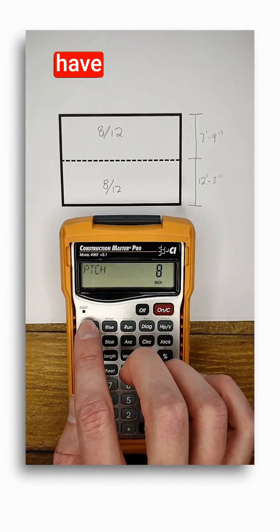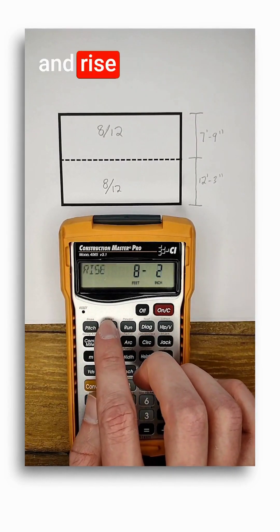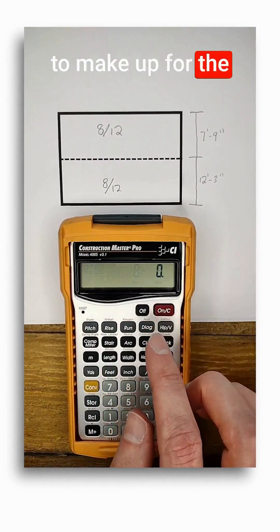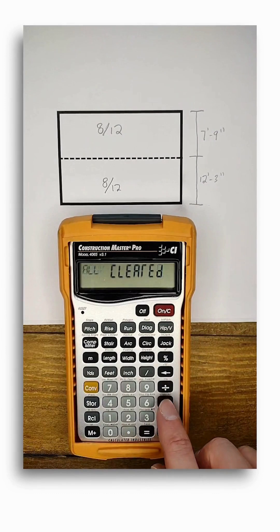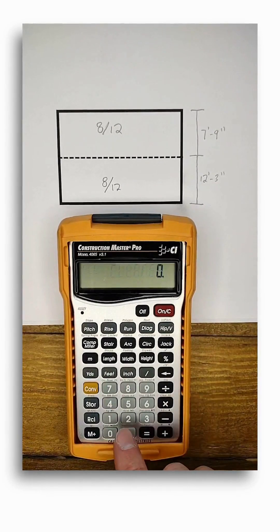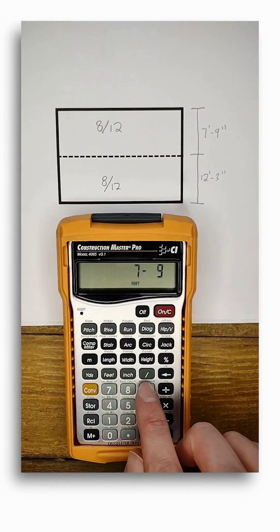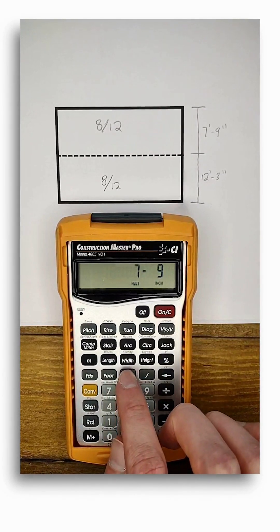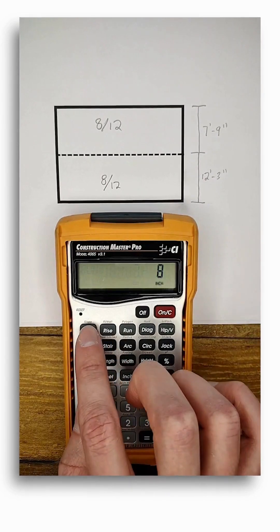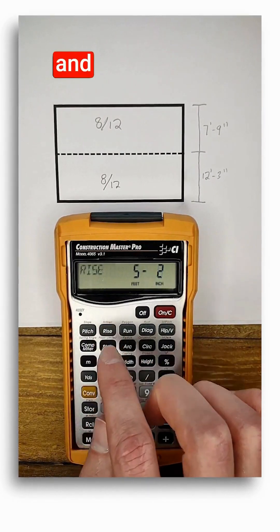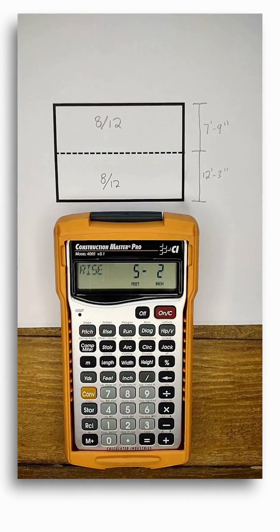If all goes well I will have a difference in rise of three feet to make up for the differing wall heights. And there you go, exactly three feet less than the other section.